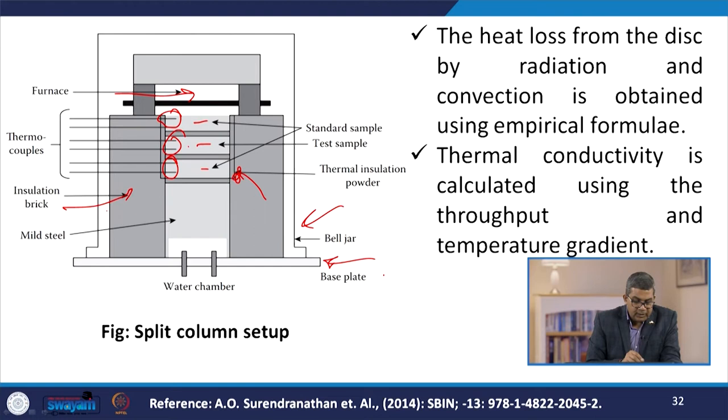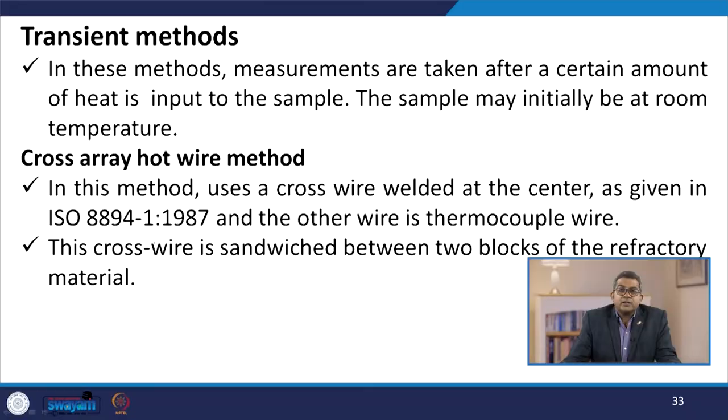In the transient method, measurements are taken after a certain amount of heat is input to the sample, which may initially be at room temperature. The cross array hot wire method uses a cross wire welded at the centre as per ISO 8894-1:1987, with the other wire being a thermocouple wire. The cross wire is sandwiched between two blocks of refractory material. A powder is fed into the heating element for a short time, the temperature rise in the block is measured, and thermal conductivity up to 2 W/m·K can be measured by this method.